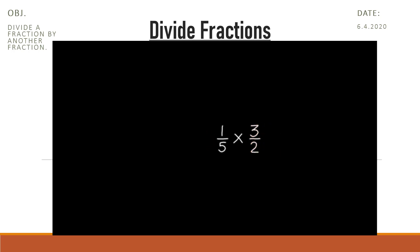Now we're ready to multiply the fractions. Multiply the numerators first: 1 times 3 equals 3. Next, multiply the denominators: 5 times 2 equals 10. So, 1 fifth divided by 2 thirds equals 3 tenths.